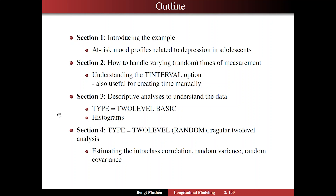On slide two you'll find the outline. Here I introduce the example, which has to do with mood profiles related to depression in adolescents, with variables such as positive affect and negative affect. In section two, we talk about a common issue with DSEM-type data — intensive longitudinal data with varying, actually random, times of measurements. Handling that is done by the T-interval option in M-Plus, and I'm going to give a more detailed discussion of the practical aspects of T-interval in this talk than what you have seen elsewhere. This understanding is also useful for creating time manually on your own.